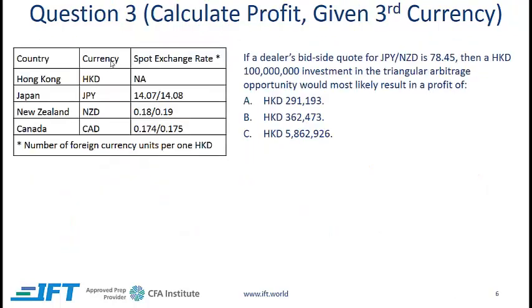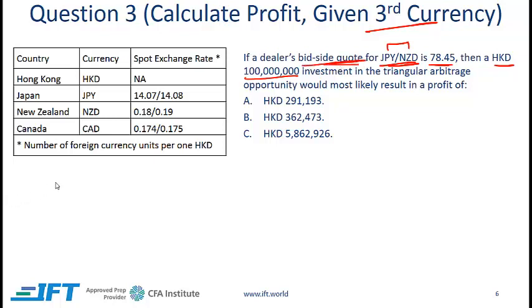Now the third and final type of question for this clip. Again we have the same currencies with rates changed slightly. The dealer's bid-side quote for Japanese yen to New Zealand dollar is given, and we want to find the profit on 100 million Hong Kong dollars. The first step is the same: calculate the implied cross rate in the interbank market. Since we are only given the bid-side dealer quote, we only need to find the interbank offer.